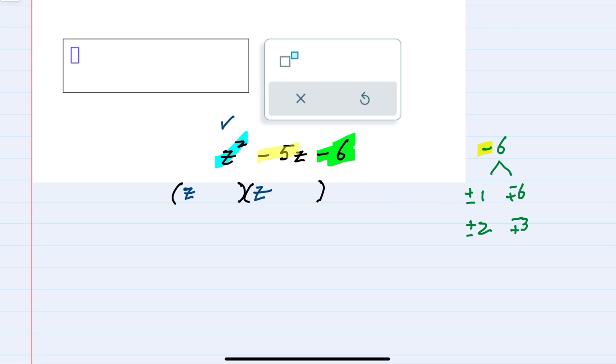The middle term in our trinomial is what we'll use to decide which pair will be part of the factoring. I'll need to pick the pair that adds up to negative 5. And I can see that would be my top pair here of plus 1 and minus 6. Those would add to be a minus 5. So I will put in plus 1 on the left, minus 6 on the right.